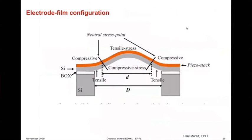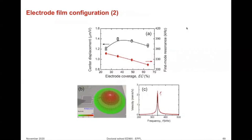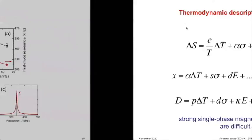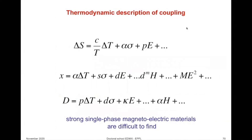The electrode-film configuration is very important and usually has to be modeled for any specific material to find the optimal electrode size for your problem. The diameter of the electrode and how much of the film or membrane is covered by the electrode is also very important — this is one of those aspects of thin films that one has to carefully consider.